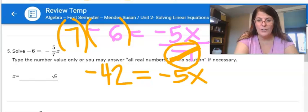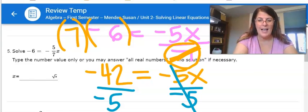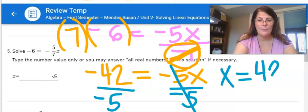Now, don't let it stress you out that the variable is on the right. It's absolutely fine. I'm going to divide both sides by negative 5. So on this side, negative 5 over negative 5 cancels and I have x equals 42 over 5, which does not simplify.